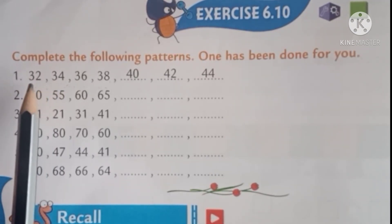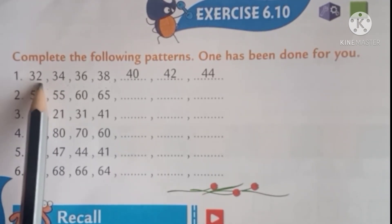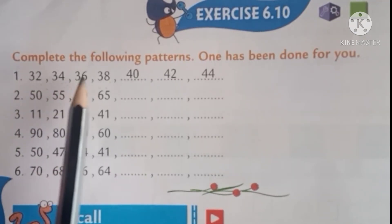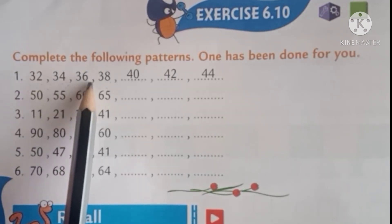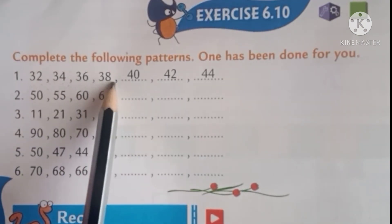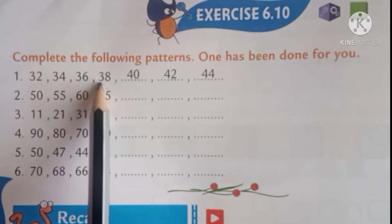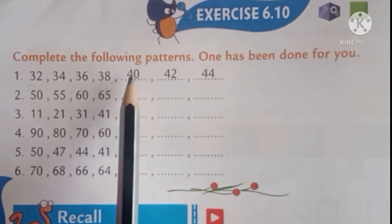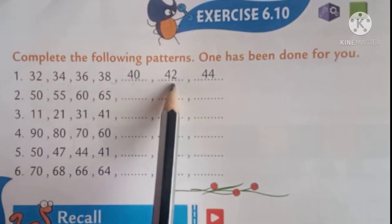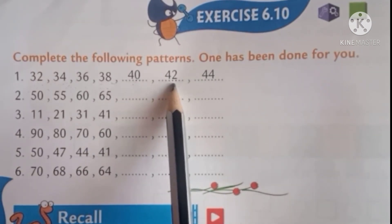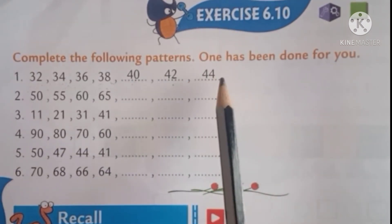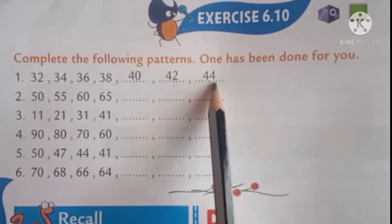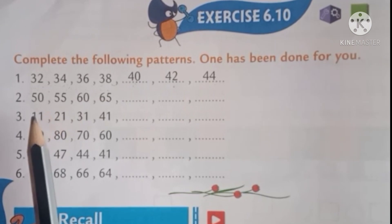Counting by 2's: 32, 34, 36, 38. 38 plus 2 is 40. 40 plus 2 is 42, then 44.